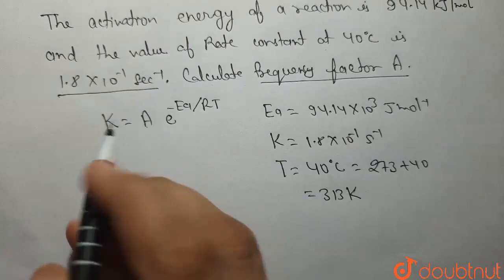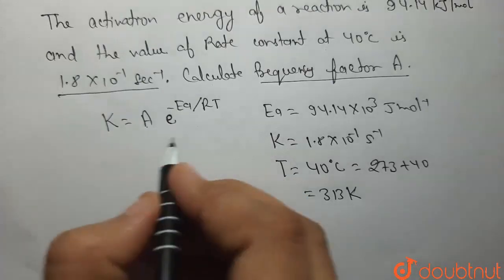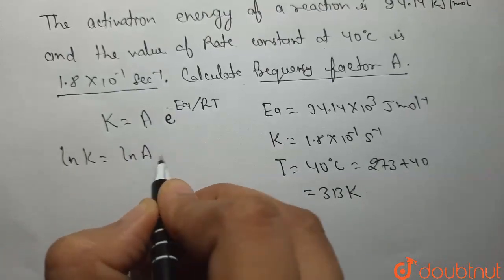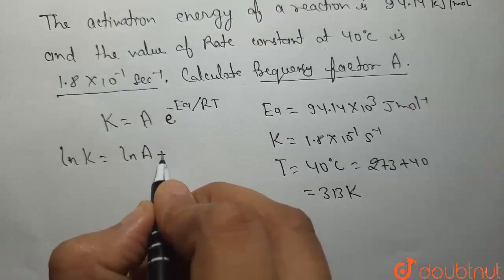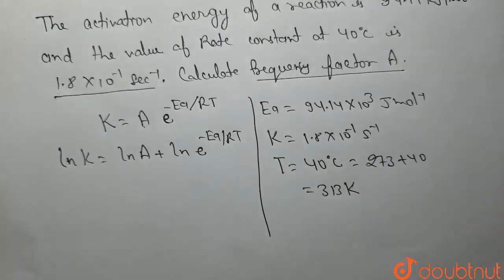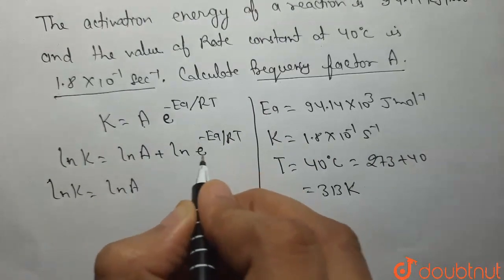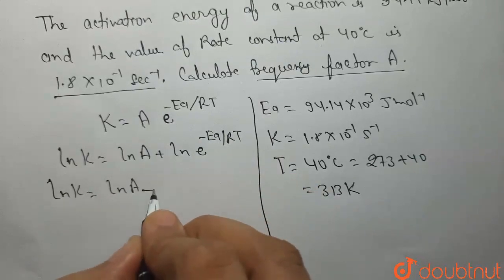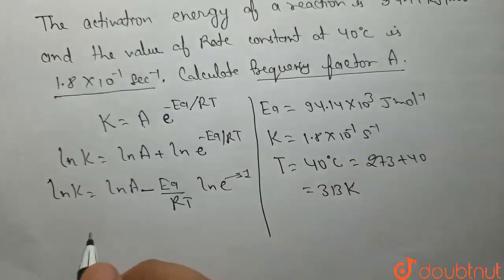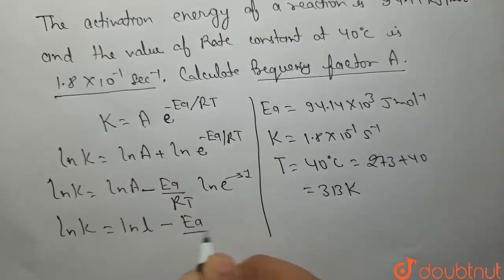अब हमें A की value निकालनी है। तो इसके power में जो term है उसको नीचे लाने के लिए हम log ले लेते हैं: ln k = ln A + ln(e^(−Ea/RT)). यह हो जाएगा ln k = ln A − (Ea/RT)·ln e. और ln e की value 1 होती है, तो equation बनेगा: ln k = ln A − Ea/RT.